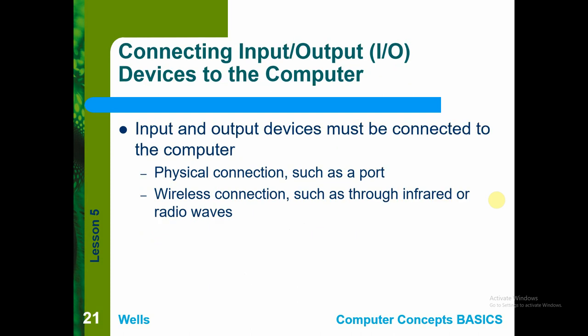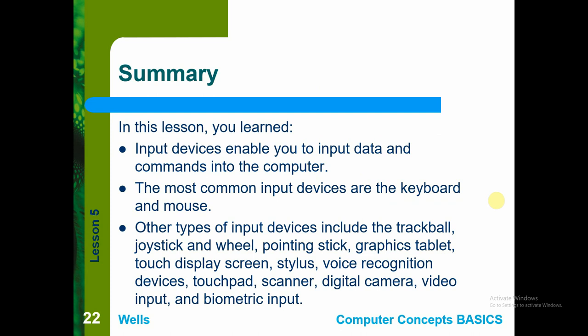Input and output devices connect to the computer through ports on the motherboard via physical cable connections. We also have wireless connections using infrared or radio waves to connect devices. For example, laptops can connect to modems or cellphones via wireless connection. These are the main examples of how input devices connect to the computer.